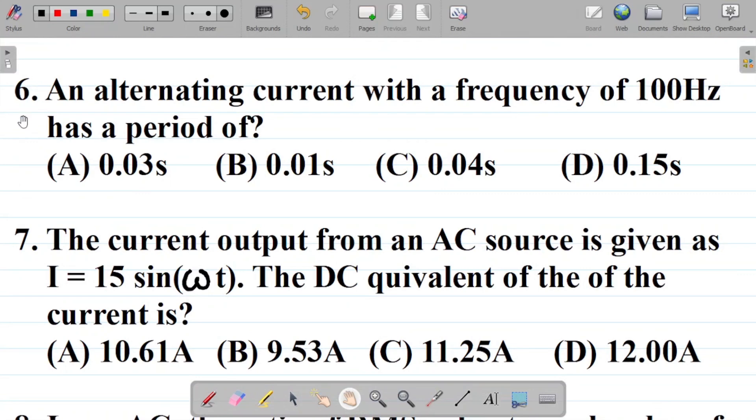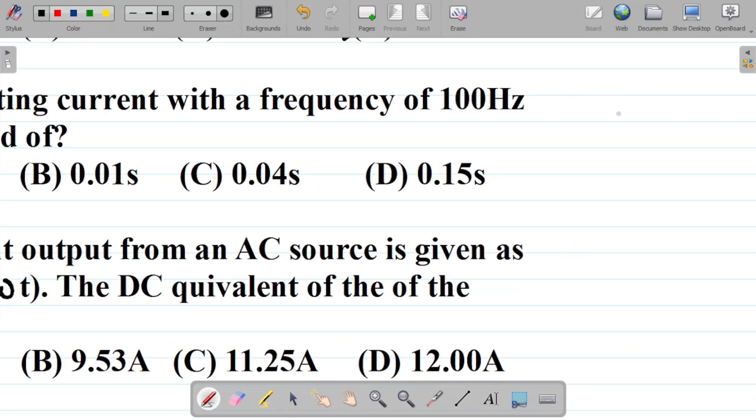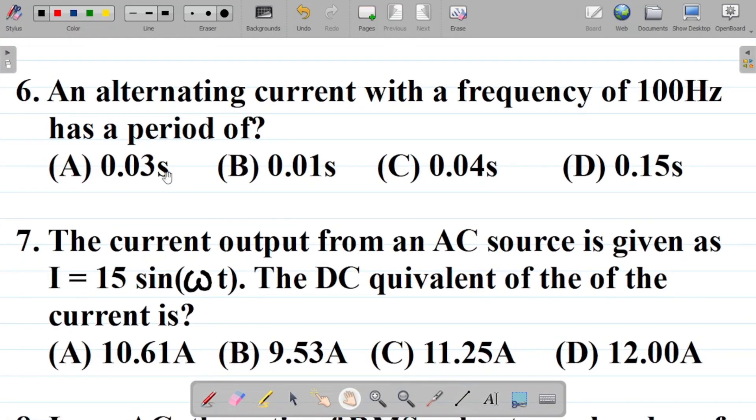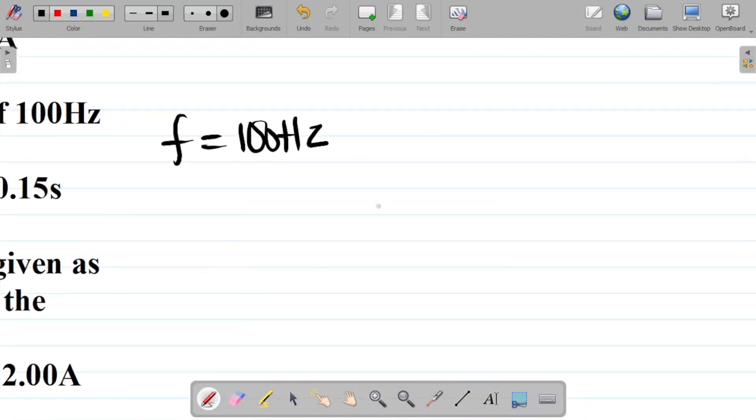Question 6 here says an alternating current with a frequency of 100 Hz has a period of... Now in this question here, you're given the frequency f as equal to 100 Hz. They said it has a period of... You have to find period t which is equal to unknown.